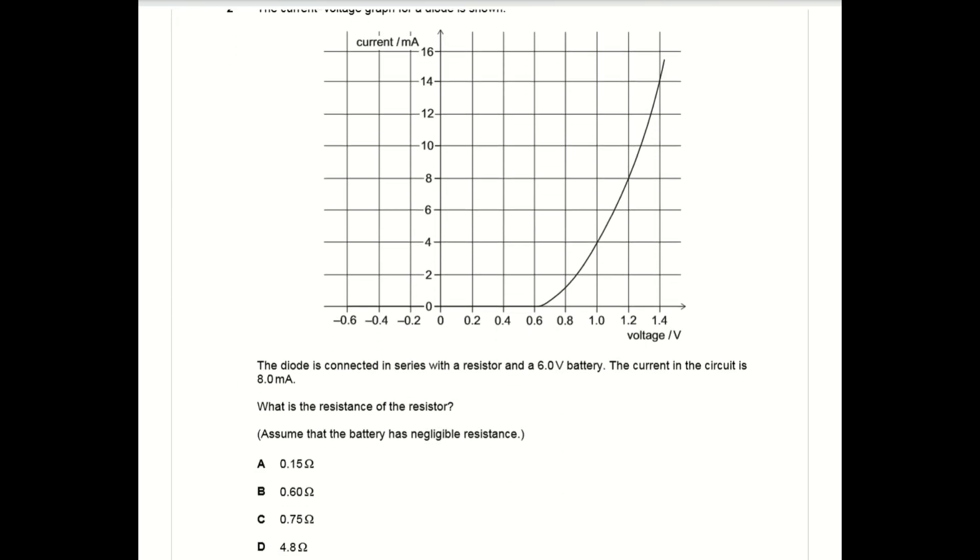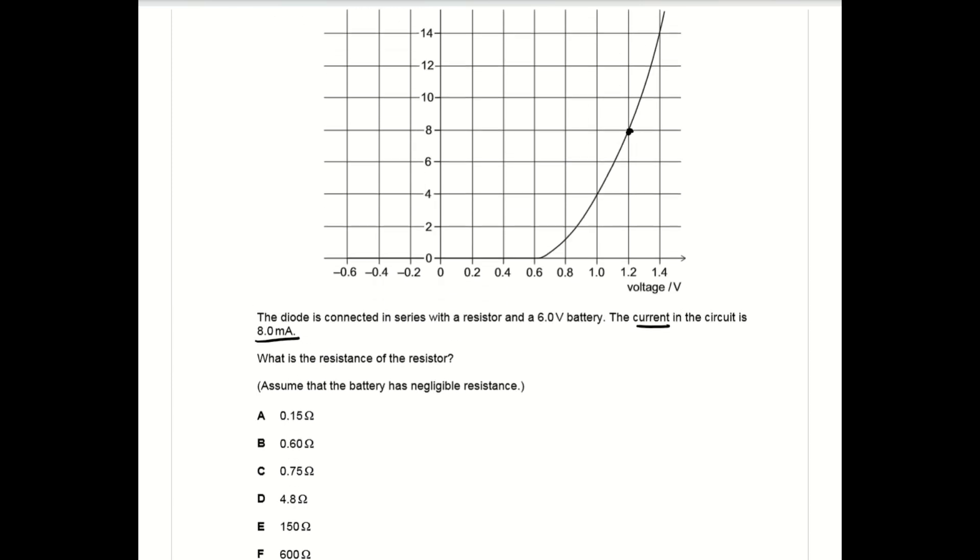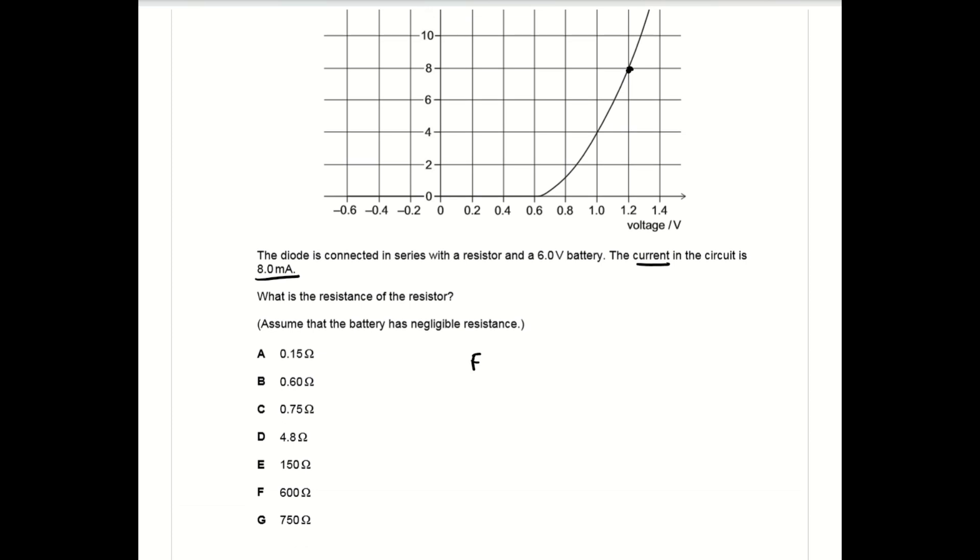Question two is our first physics question of the paper. You know the current in the circuit is 8 milliamps, so you can use the graph to work out the corresponding voltage across the diode. The diode is in series with the resistor, so if there's 1.2 volts across the diode there must be 4.8 volts across the resistor.